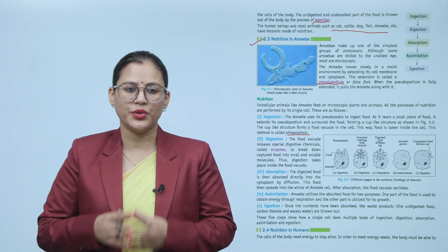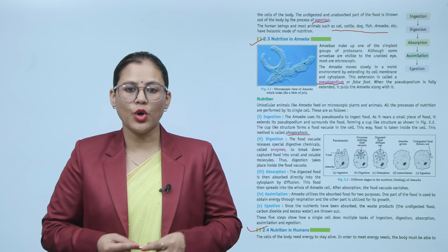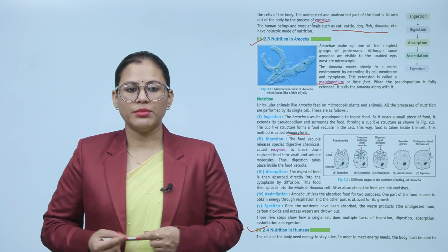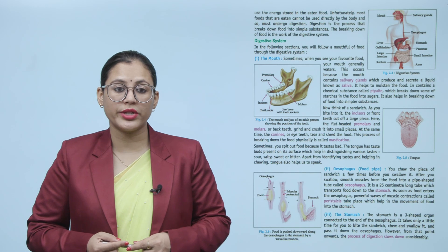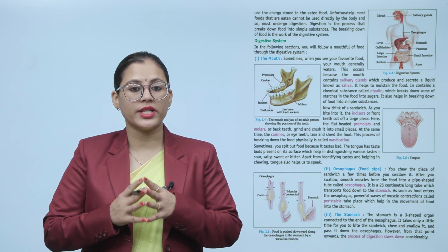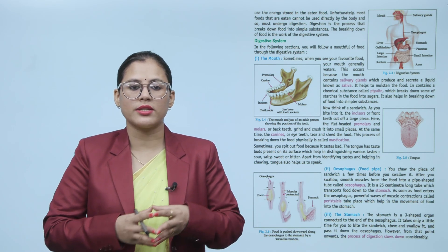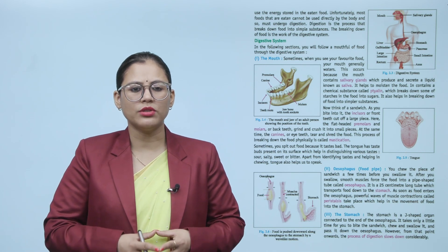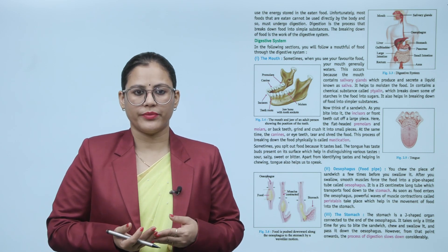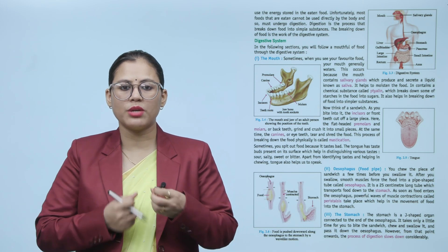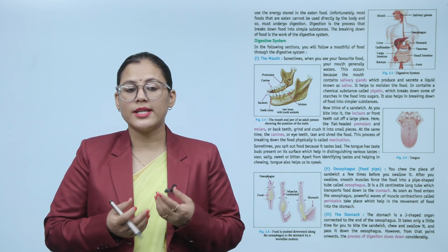Section 2.4: Nutrition in Humans. The cells of the body need energy to stay alive. In order to meet energy needs, the body must be able to use the energy stored in the eaten food. Unfortunately, most foods that are eaten cannot be used directly by the body and so must undergo digestion. Digestion is a process that breaks down food into simple substances, and this breaking down of food is the work of the digestive system.